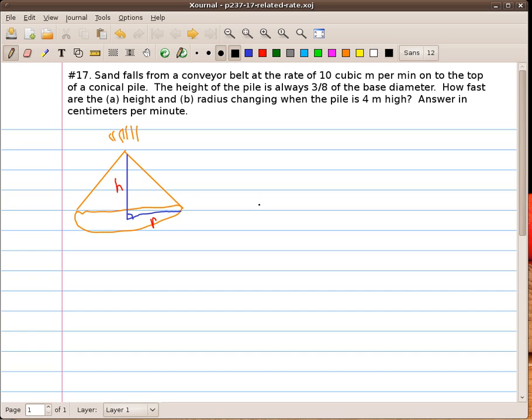Let's go ahead and talk about what we're given in the problem. First of all we know that it's falling 10 cubic meters per minute, so that's our volume changing. So we're going to call that dV over dt and we'll indicate that that is 10 cubic meters per minute.